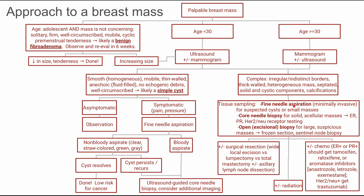The benefit of fine needle aspiration is that it doesn't really hurt, it's a quick procedure done in the office — this is for small masses and suspected cysts only. The core needle biopsy is a more extensive procedure where you get a chunk of the mass, allowing you to do receptor testing: ER, PR, and HER2 new. The open excisional biopsy lets you remove the suspicious mass in its entirety, do frozen sections, send it to pathology for characterization, and also perform a sentinel node biopsy — sampling adjacent nodes to see if the mass has spread.